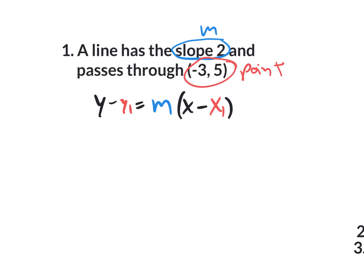The point is x1, y1, so the x1 value goes in for x1 and the y1 value goes in for y1. I recommend writing it down and then rewriting it with blank spots — y minus blank equals blank times (x minus blank) — that way it's easy to plug in. Your y1 is 5, so put 5 there. Your m value is 2, put 2 there.